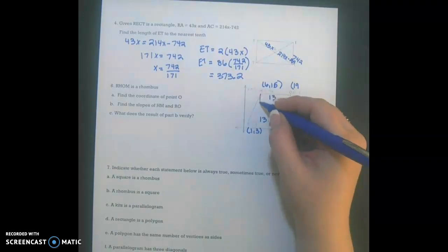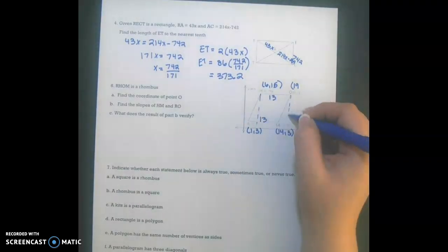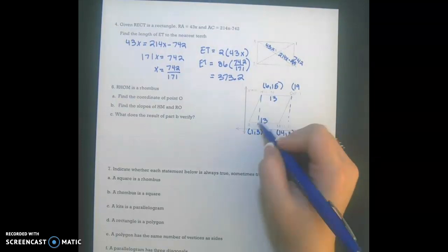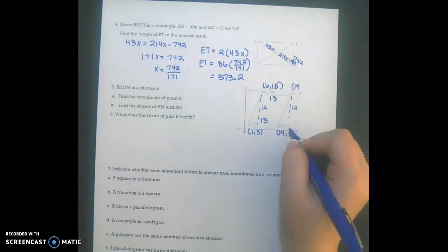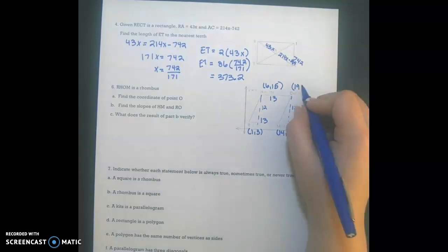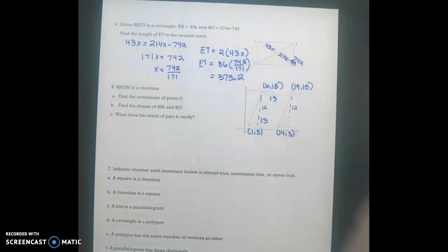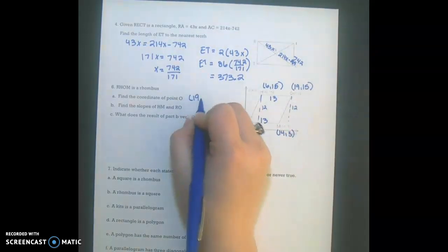Now, my change in height here is also going to be consistent. So my change in y values here is from 3 to 15 is 12, so this would also be 12. So 3 plus 12 would be 15. So 19, 15 are my coordinates of O.